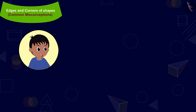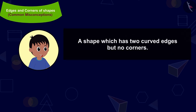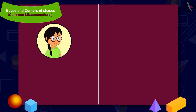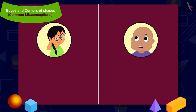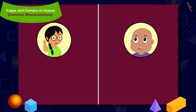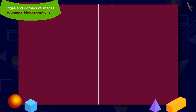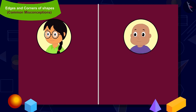Raju's next question is: make a shape which has two curved edges but no corners. Meenu and Bablu start thinking. Children, can you make such a shape? Let us see which shapes Meenu and Bablu have made.